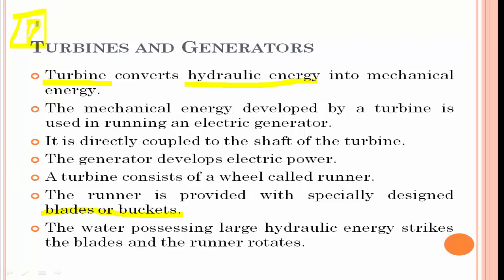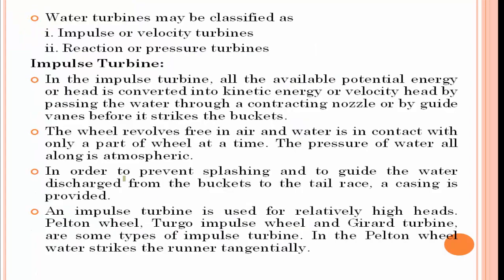The runner will be attached to a shaft, and this shaft will be connected to a generator. By means of the generator, we can generate electricity. There are two classifications or types of water turbines: impulse and reaction.